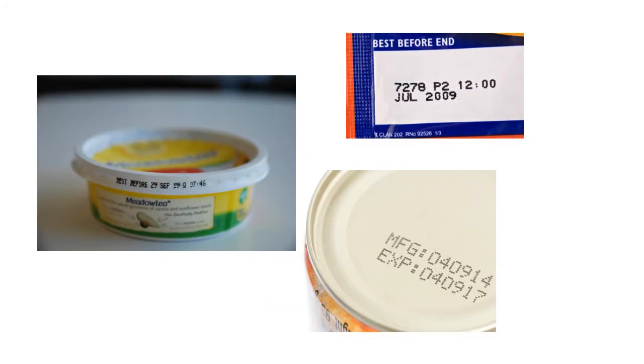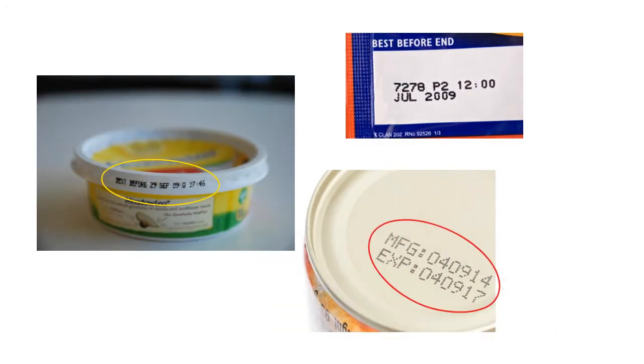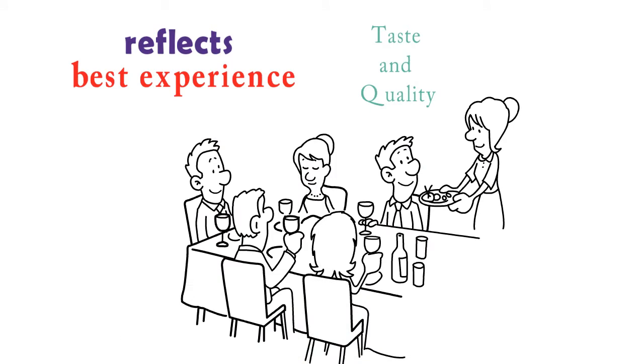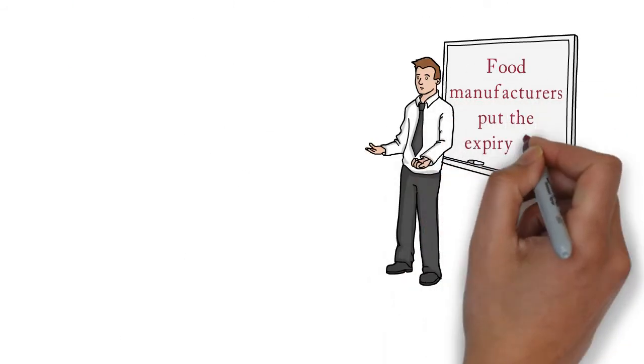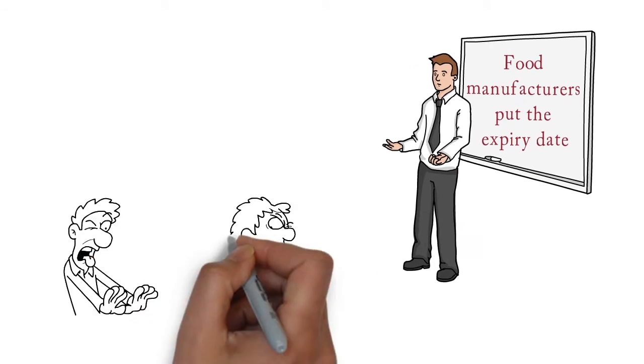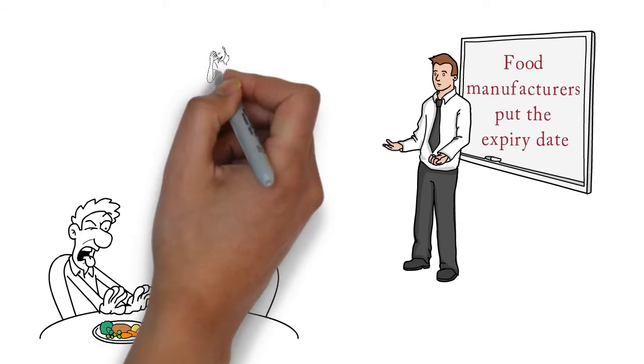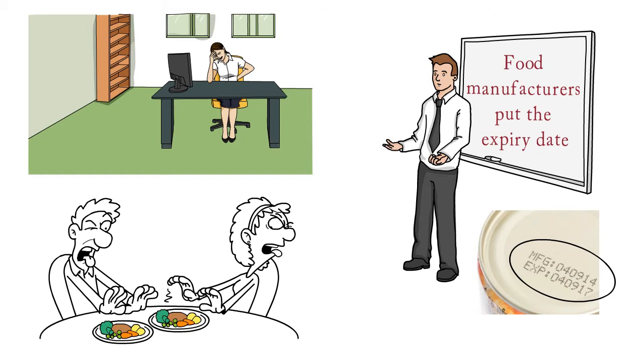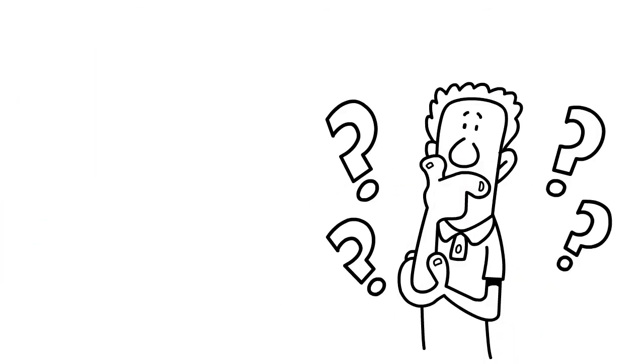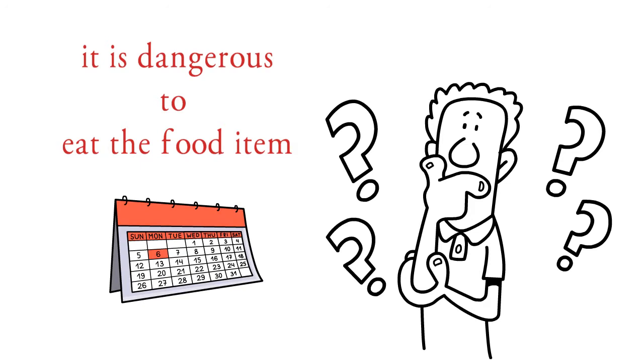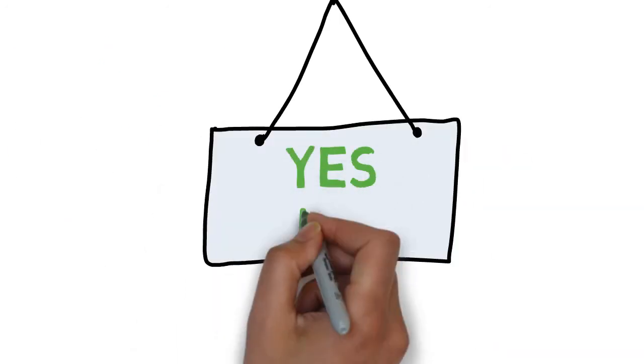Expiry dates are mentioned on all kinds of packaged food by the makers to let people know by when they should consume the food. It reflects the best experience in terms of taste and quality that consumer will derive by eating it. Food manufacturers put the expiry date so that you cannot complain of bad taste or tummy ache if you ate the stuff later. But does it mean that it is dangerous to eat the food item after that day? Well, the answer is yes and no.